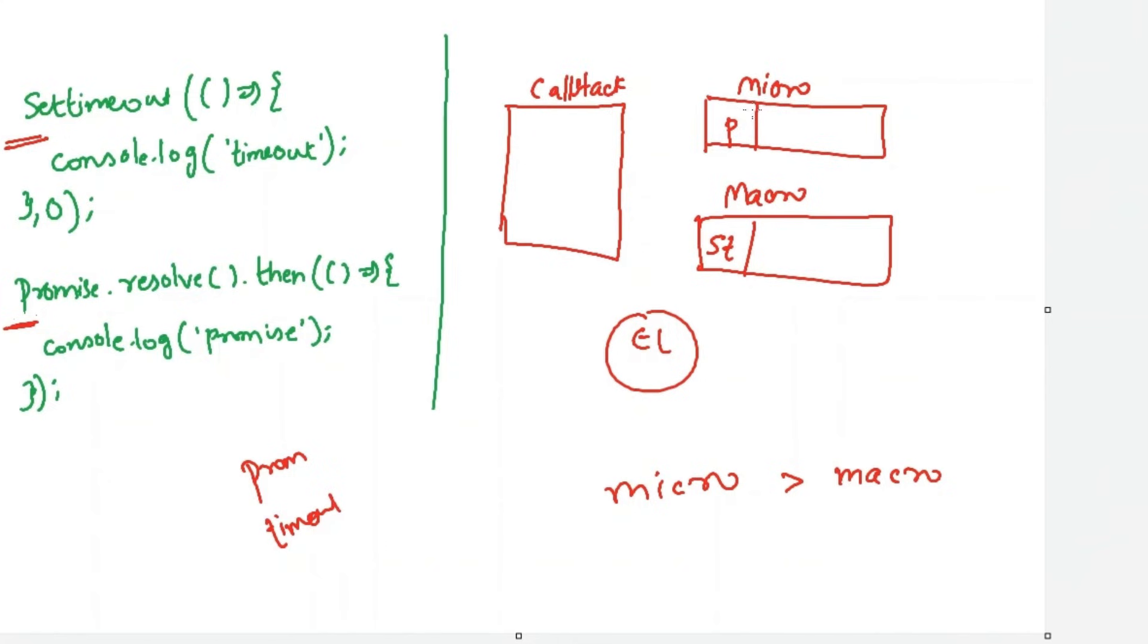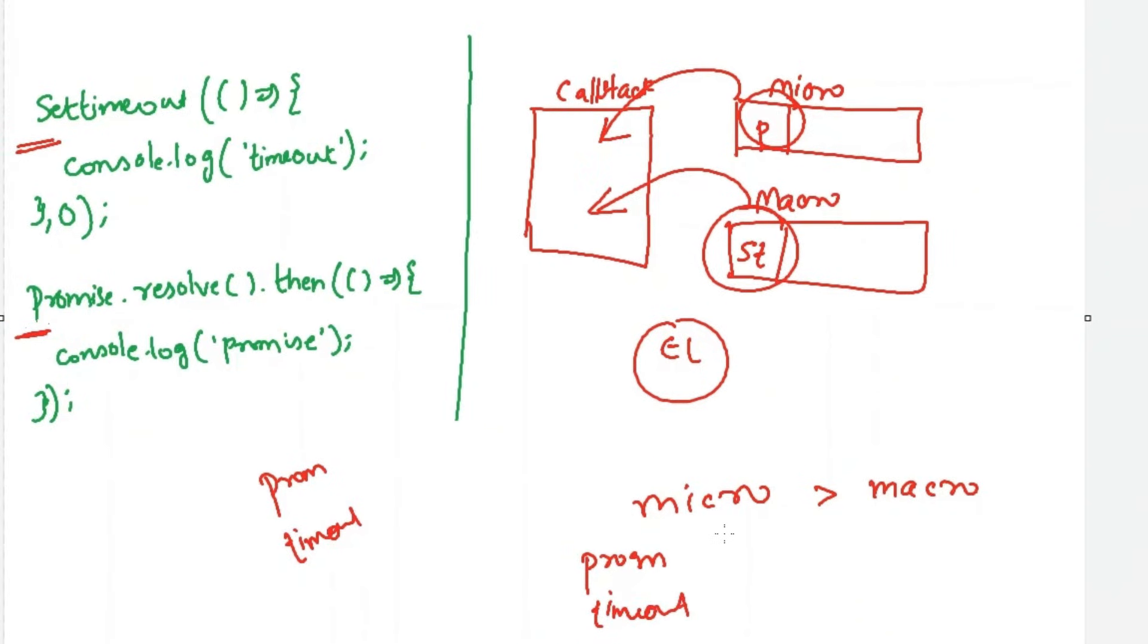The things which are present in the micro task queue will be pushed into the call stack one by one and executed immediately. The promise will be logged into the console. Once it's done, the things present in the macro task queue will be pushed into the call stack and executed immediately. It will log timeout into the console.